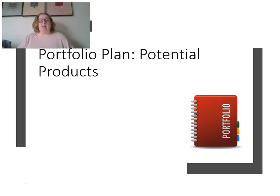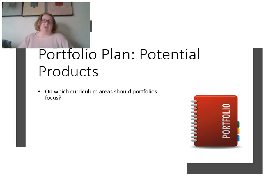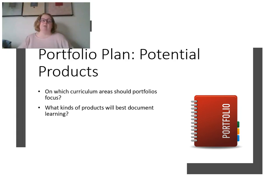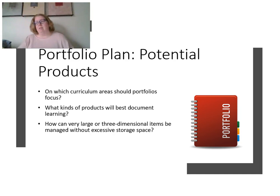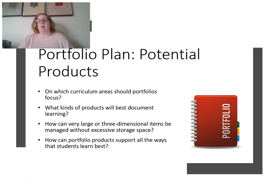Once I have a purpose, I need to think about what products I'll include. I'd suggest teachers start with just one curriculum area — if you're an elementary teacher, maybe just writing or math, not all of them. What kind of products will best demonstrate that learning? Rather than collecting everything, think about a few key things: projects, writing samples, tests, or worksheets. If you're documenting learning through large or three-dimensional items, you can take pictures or write descriptions. This was relevant to me as an art teacher — I couldn't keep sculptures in a flat portfolio system, so I had to think creatively about how to incorporate those products.